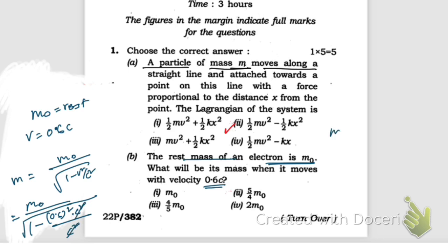So m equals m₀ by root over one minus, and 0.6 squared is 0.36.